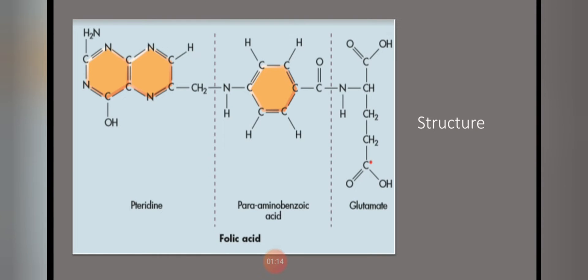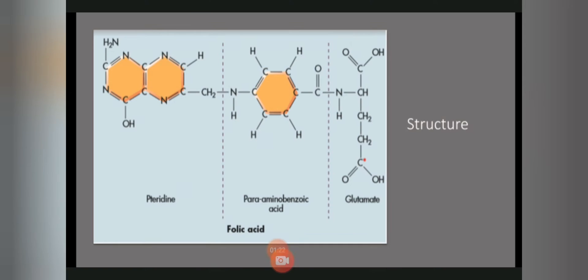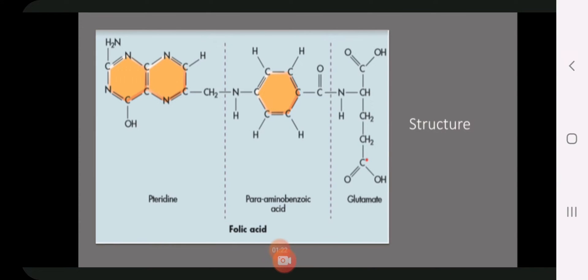The structure of vitamin B9 consists of three parts: pteridine, para-aminobenzoic acid, and glutamate. The synthetic form, folic acid, contains only one molecule of glutamate, while folate contains more glutamate molecules. The natural form, folate, must be converted into monoglutamate form to be absorbed from the intestine, after which it travels to the liver for further metabolism.